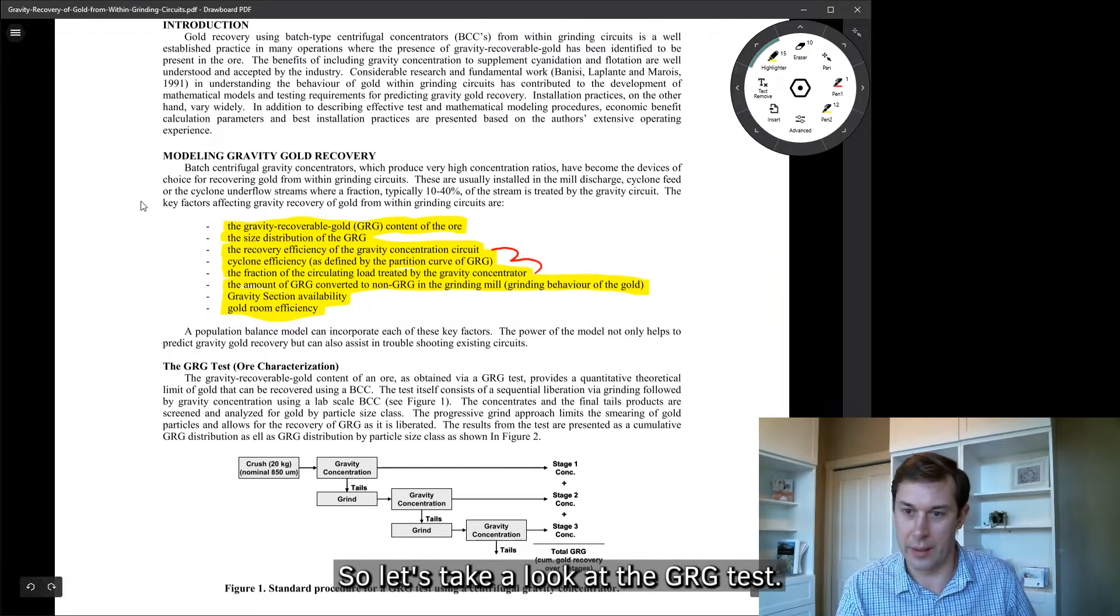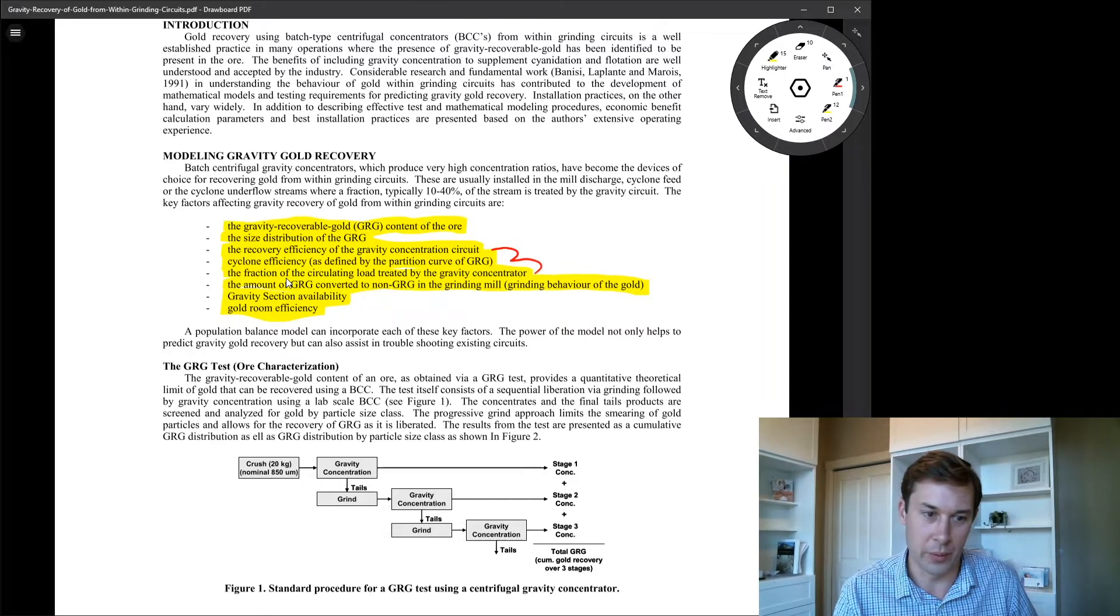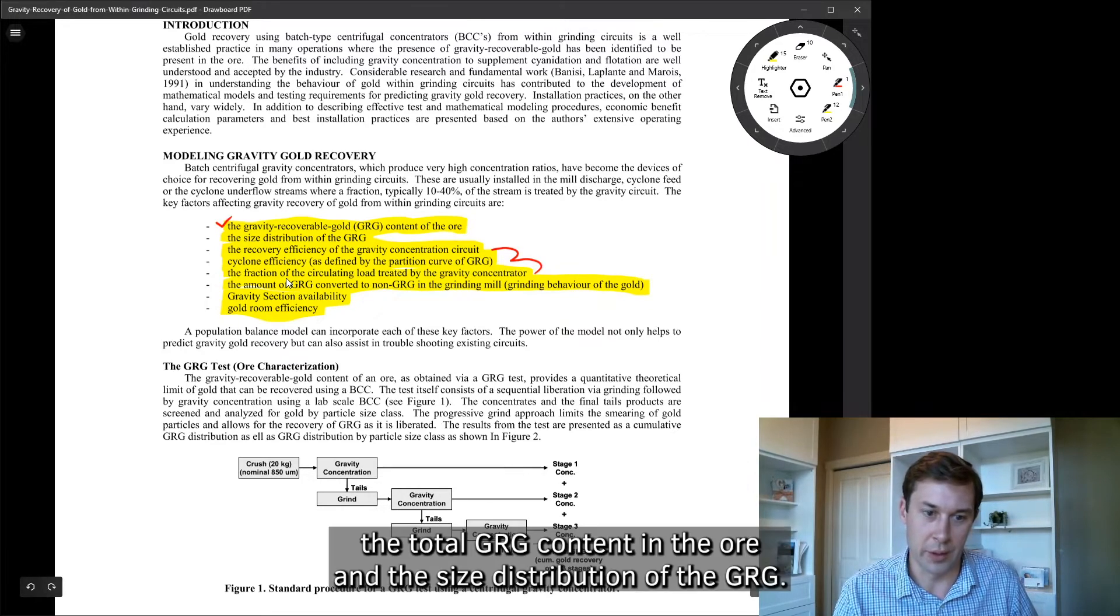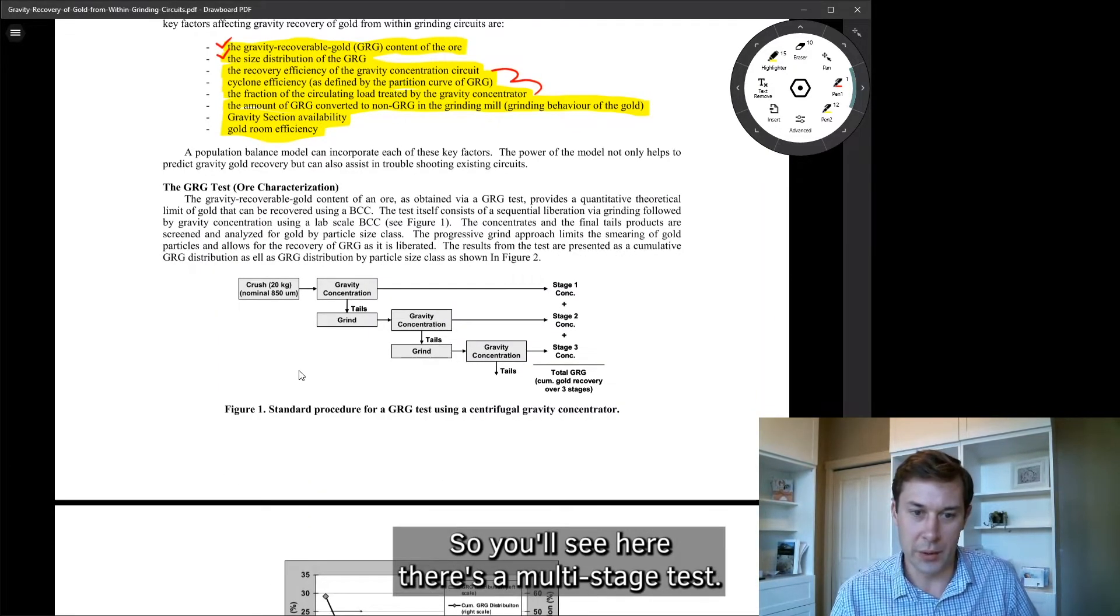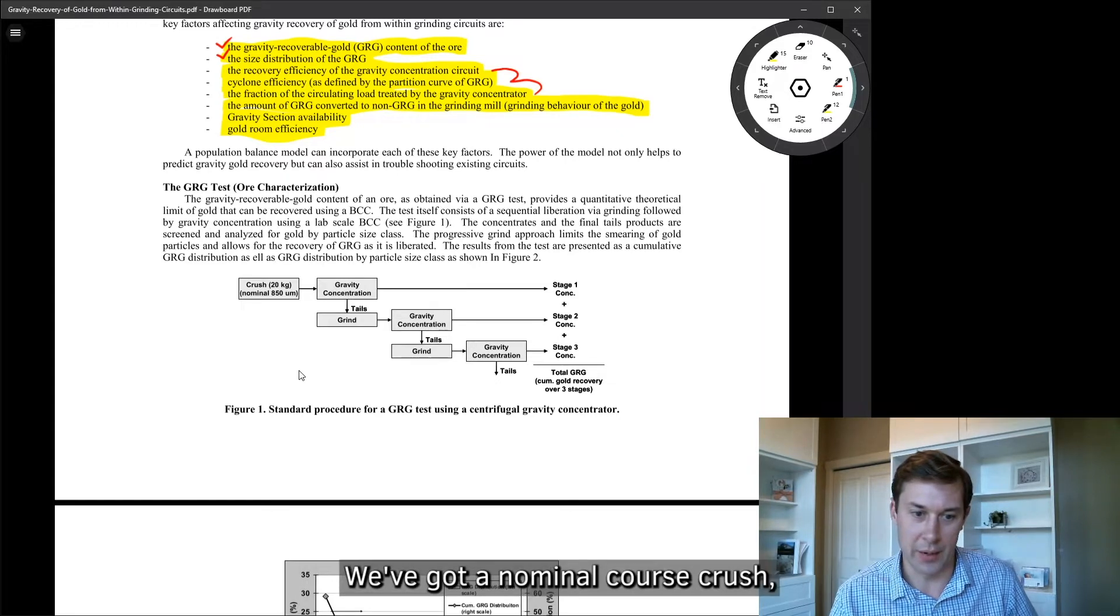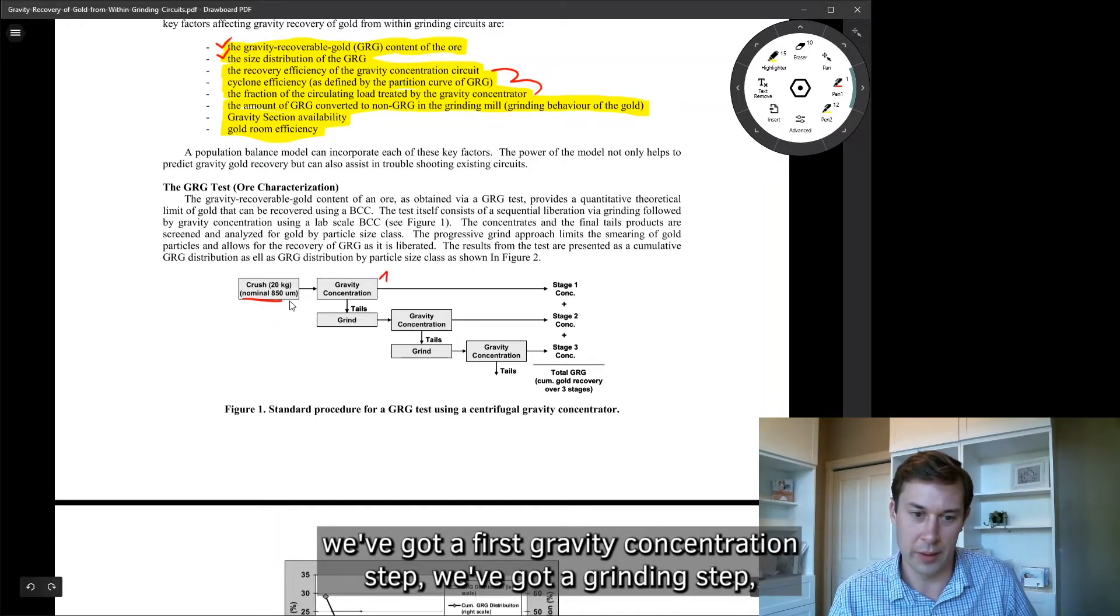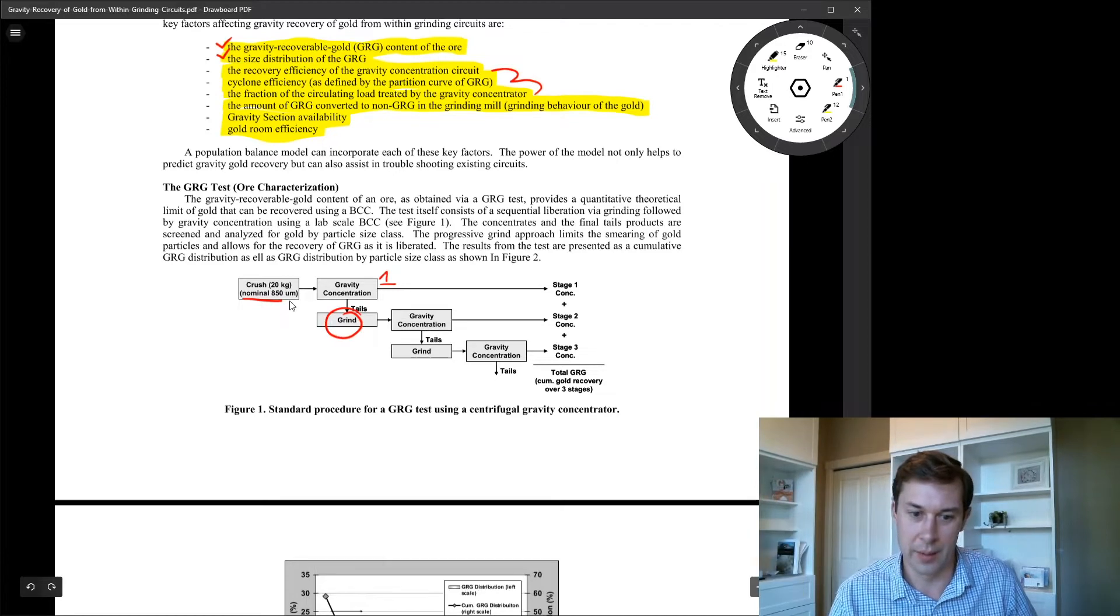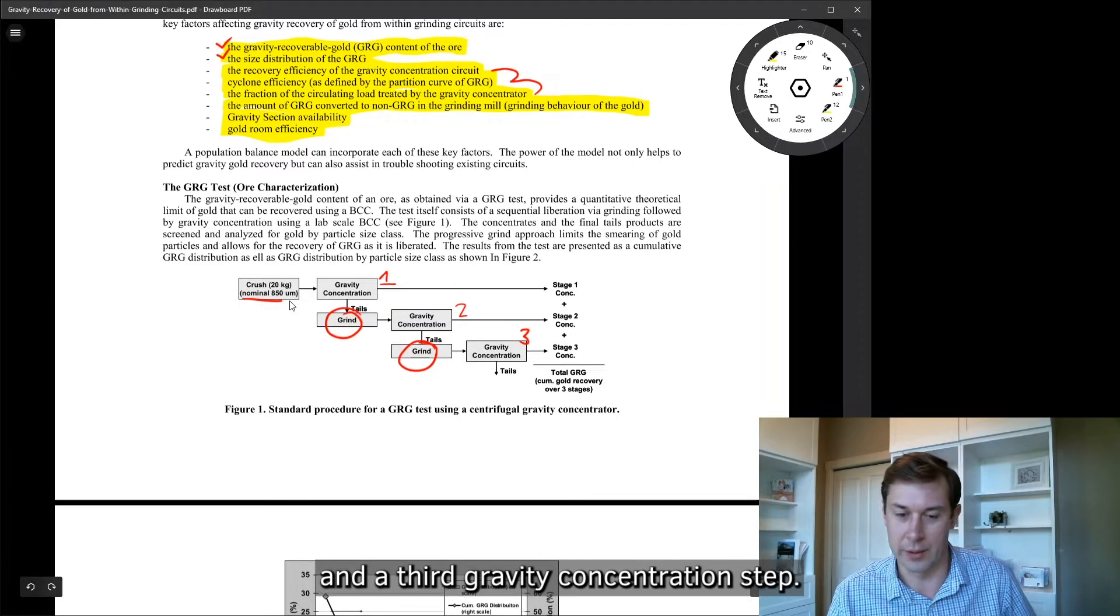So let's take a look at the GRG test. So the GRG test is going to give you information about the total GRG content in the ore and the size distribution of the GRG. So how do we get that? So you'll see here, there's a multi-stage test. We've got a nominal coarse crush. We've got a first gravity concentration step. We've got a grinding step. Then a second gravity concentration step. And a grinding step. And a third gravity concentration step.